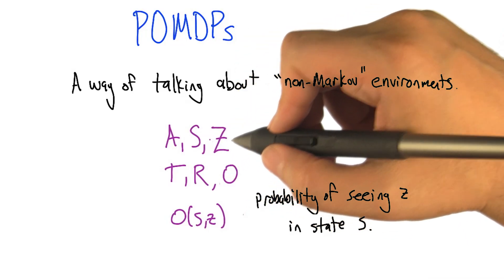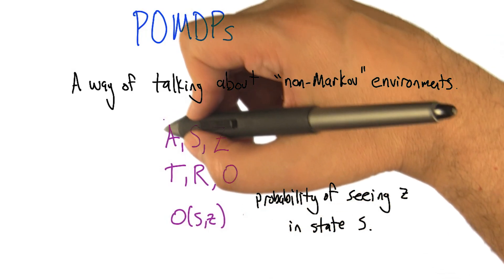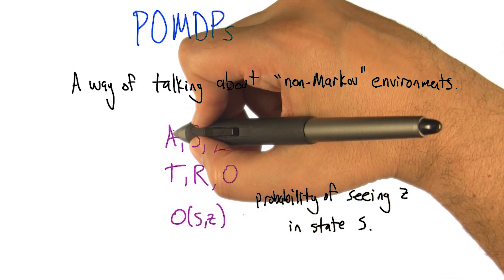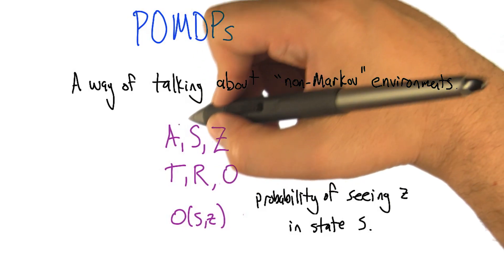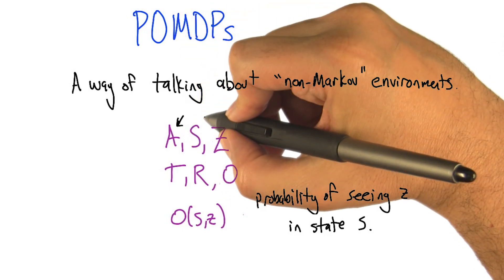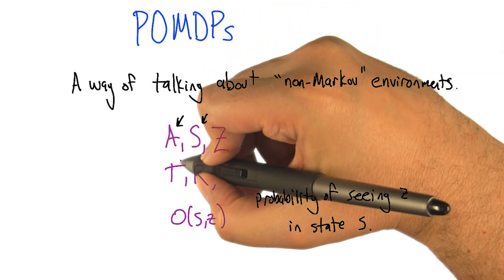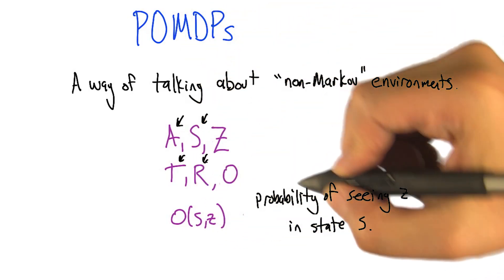Here are the quantities that make up a POMDP. We have a set of quantities that are actually just an MDP: a set of actions, and states, and transitions, and rewards.